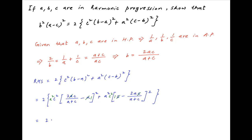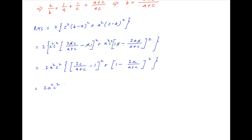Therefore this expression becomes equal to 2a²c² times [(2ac/(a+c) − a)/(a+c)]² plus [(a+c − 2ac)/(a+c)]², which is equal to 2a²c² times [(2ac − (a+c))/(a+c)]² + [(a+c − 2ac)/(a+c)]².